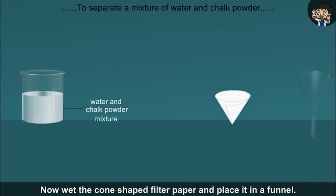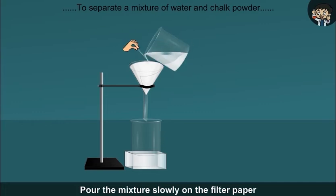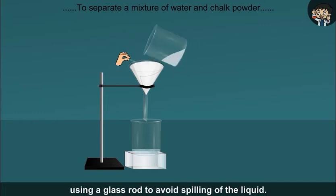Wet the cone-shaped filter paper and place it in a funnel. Pour the mixture slowly on the filter paper using a glass rod to avoid spilling of the liquid.